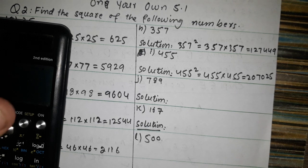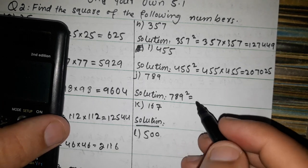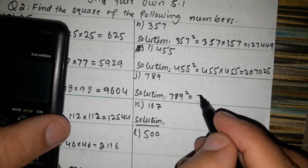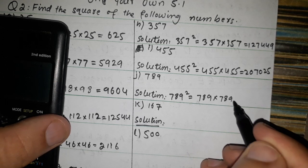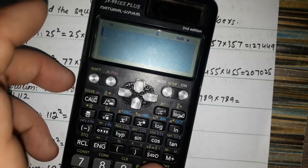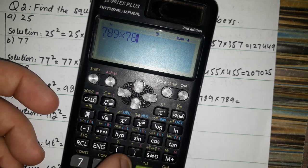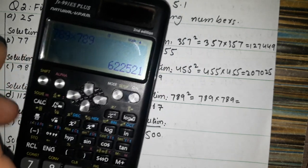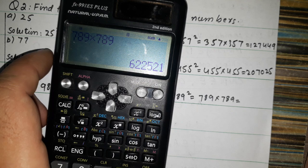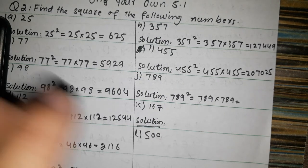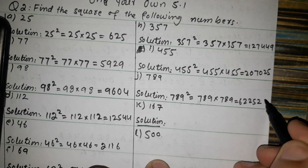Now 789 square. 789 cross 789 — we multiply 789 by 789. The answer is 622521. So 789 squared equals 622521.